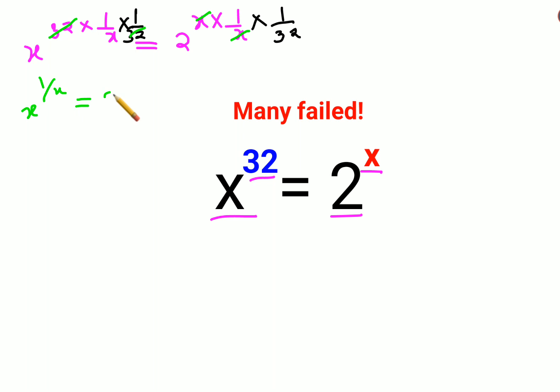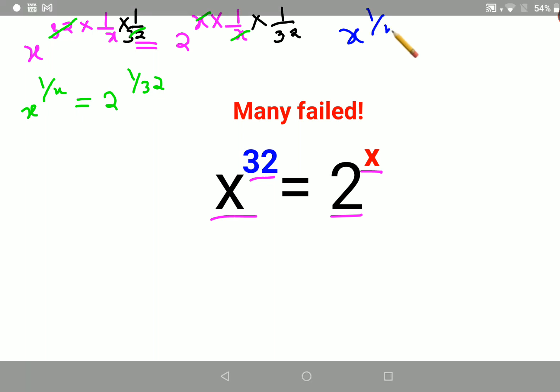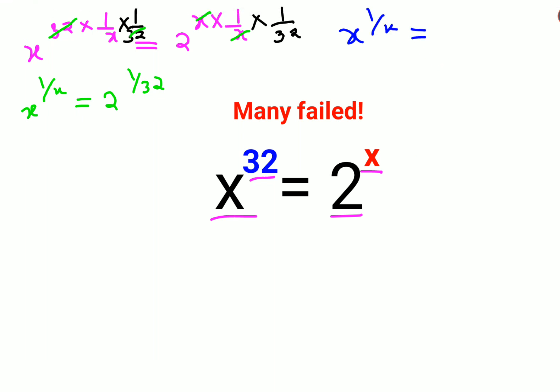Now this looks like x raised to 1 upon x equals 2 raised to 1 upon 32, but after this students we are stuck. So here what we need to try to do is when you have x raised to 1 upon x, your job is to write your constant in terms of a raised to 1 upon a.